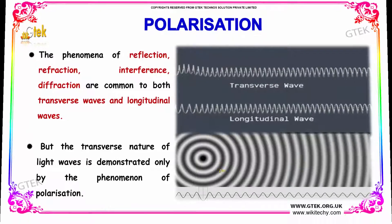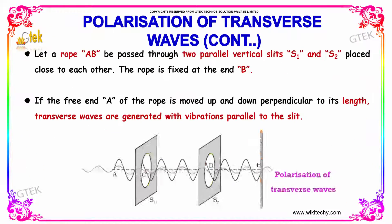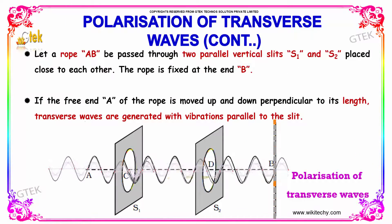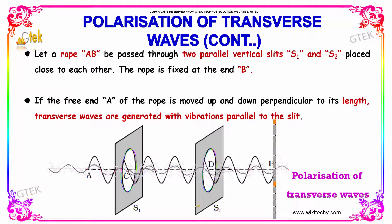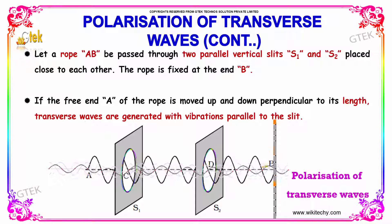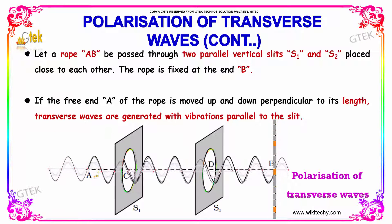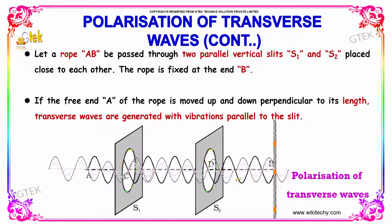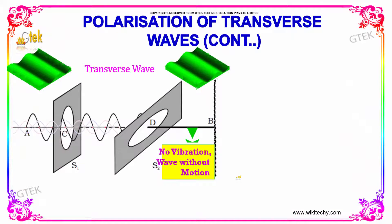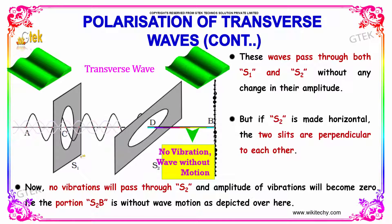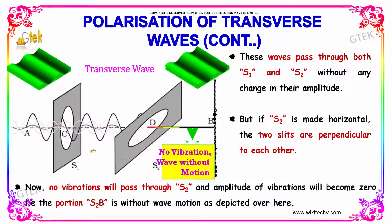Let's see further on polarization. Consider a rope AB. We pass it through two parallel vertical slits, S1 and S2, placed close to each other. The rope is fixed at end B. If the free end A of the rope is moved up and down, perpendicular to its length, transverse waves are generated with vibration parallel to the slit. These waves pass through both S1 and S2 without any changes in their amplitude.